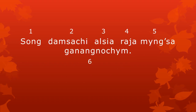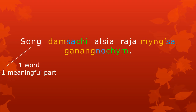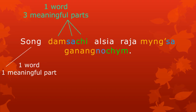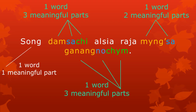When we put all the meaningful parts together again to make the sentence, here we see the different meaningful parts that make the words shown in different colors. The word Song has one meaningful part. The word Dam, Sa, Chi has three. The words Al, Siya, and Raja have one meaningful part each. The word Meng, Sa has two. And the word Gan, No, Chum has three meaningful parts.